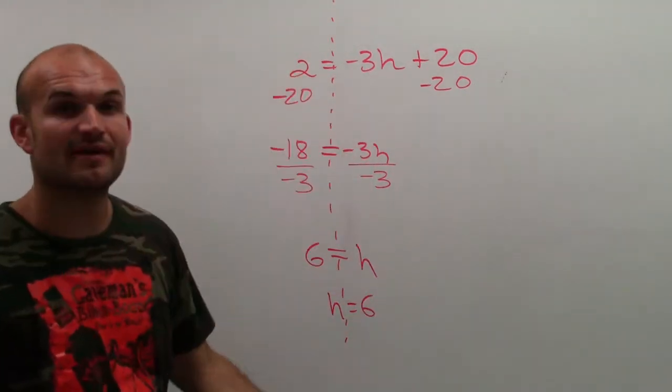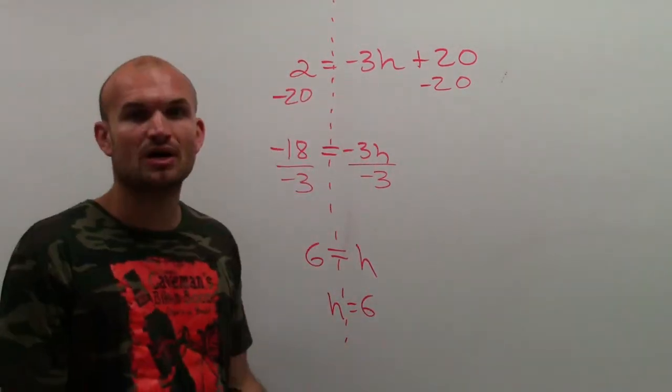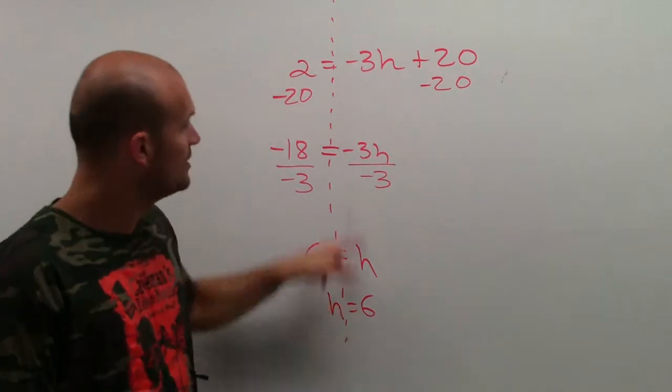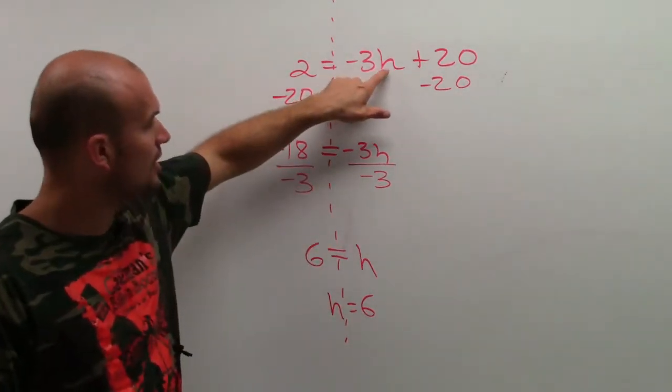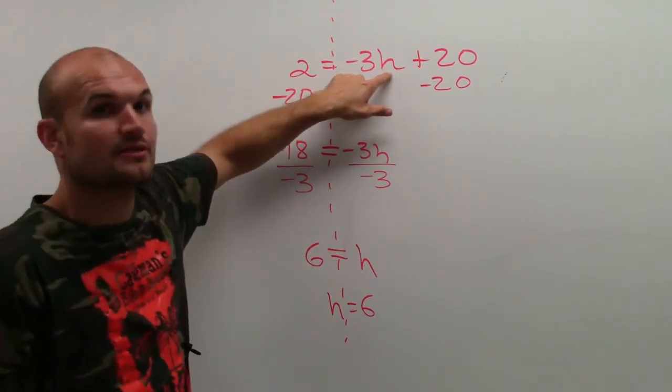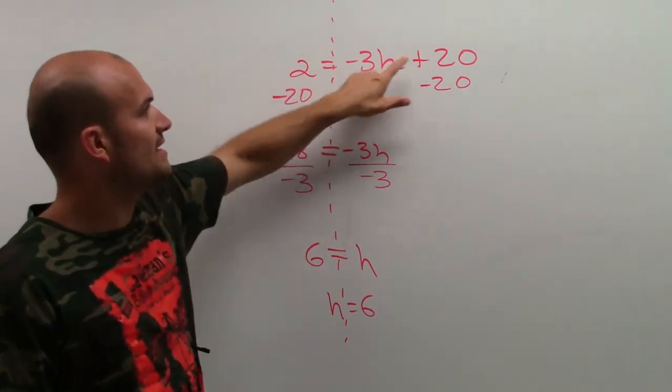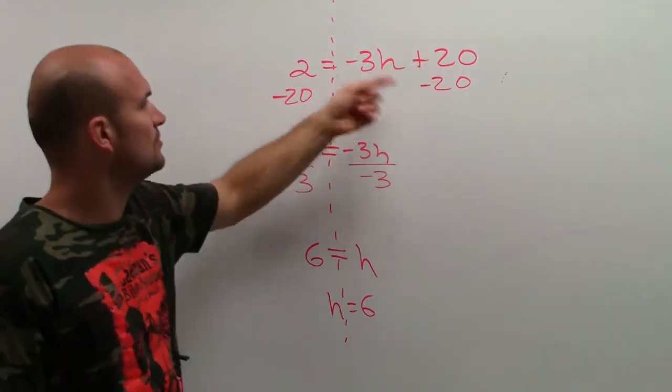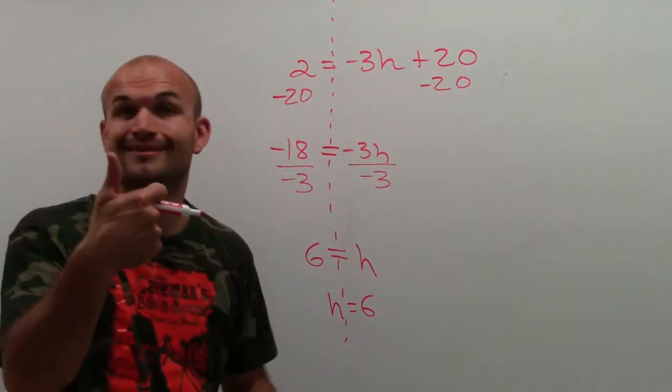We can plug it in and do the evaluation, or we can just always check it in your head. So you can do it here. Let's plug a 6 in for h. So negative 3 times 6, because 6 is equal to h, is negative 18. Negative 18 plus 20 is 2, and that's equal to 2. So we're good.